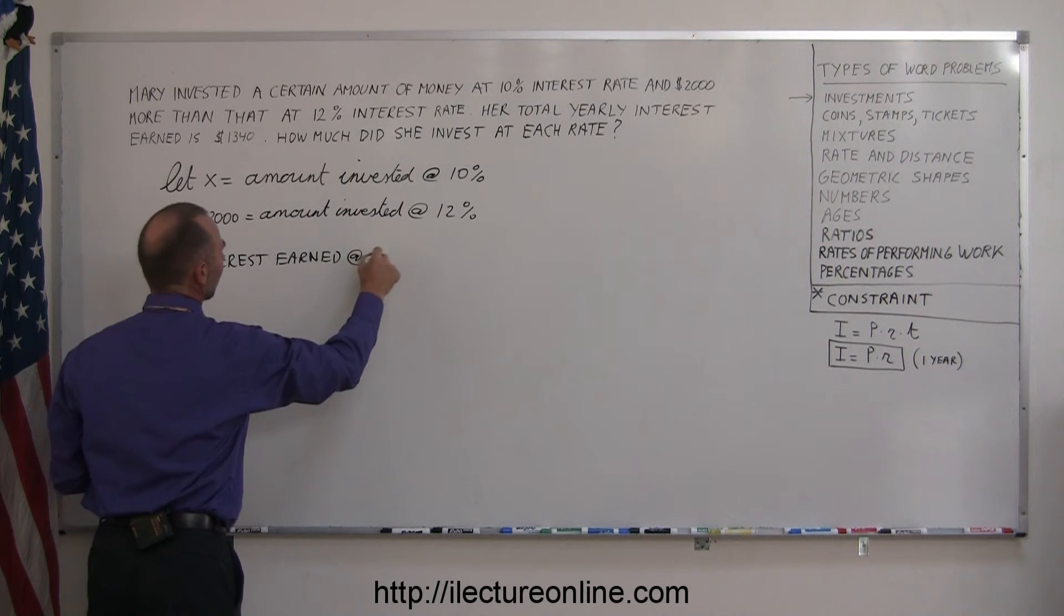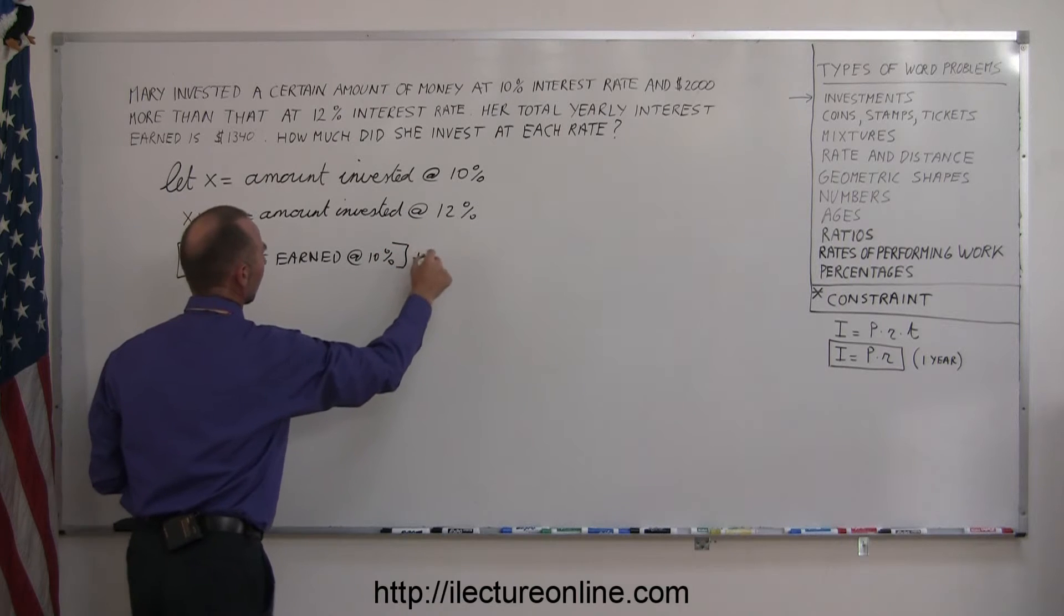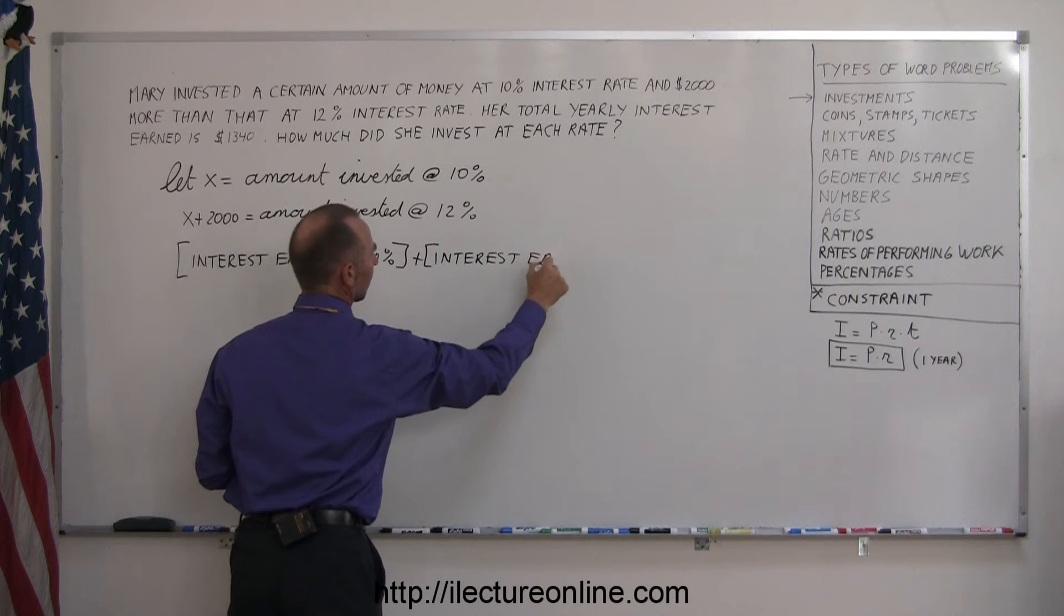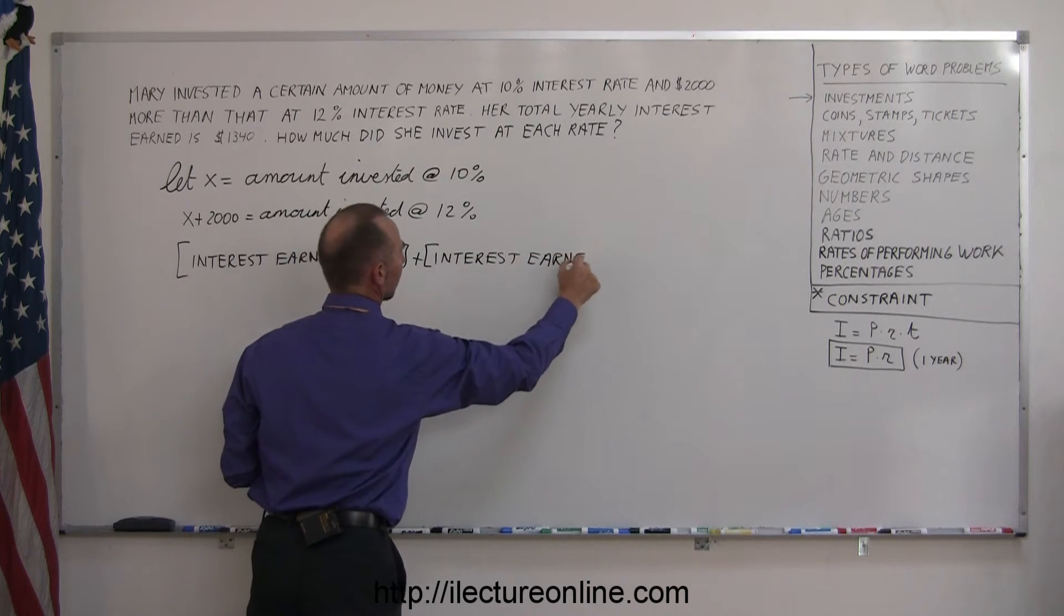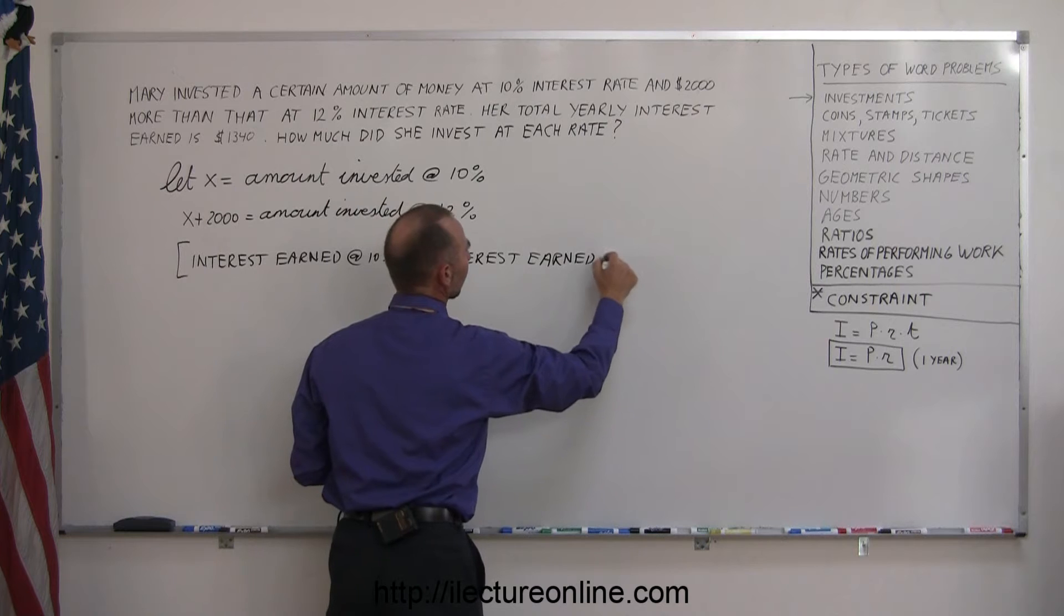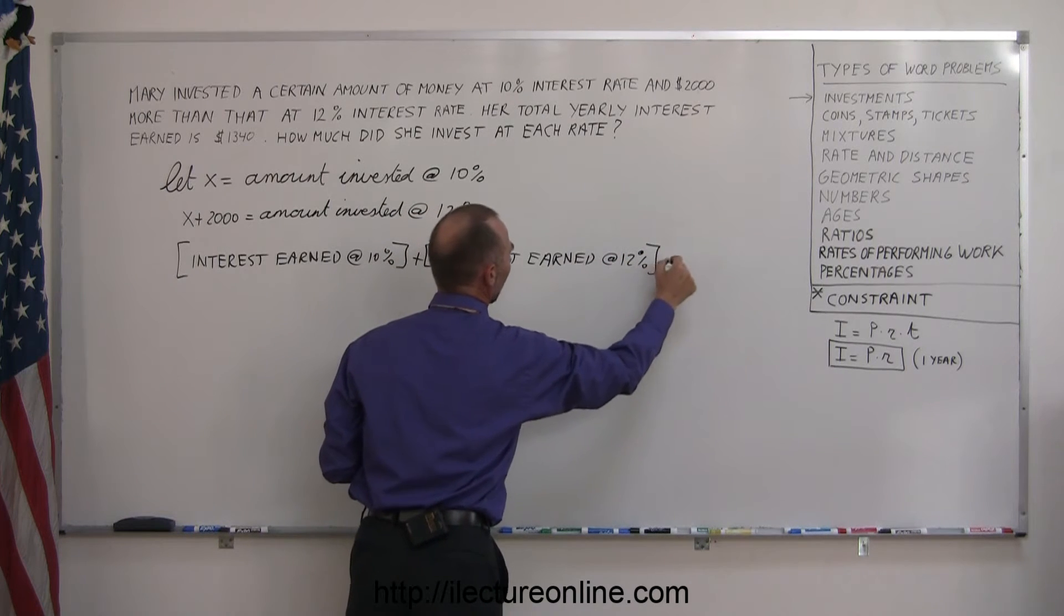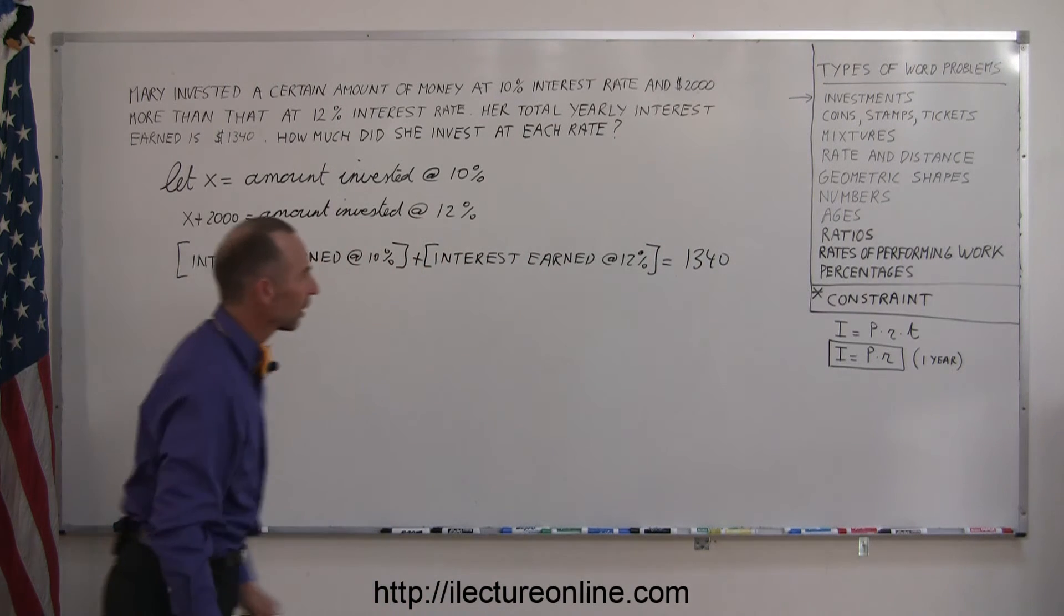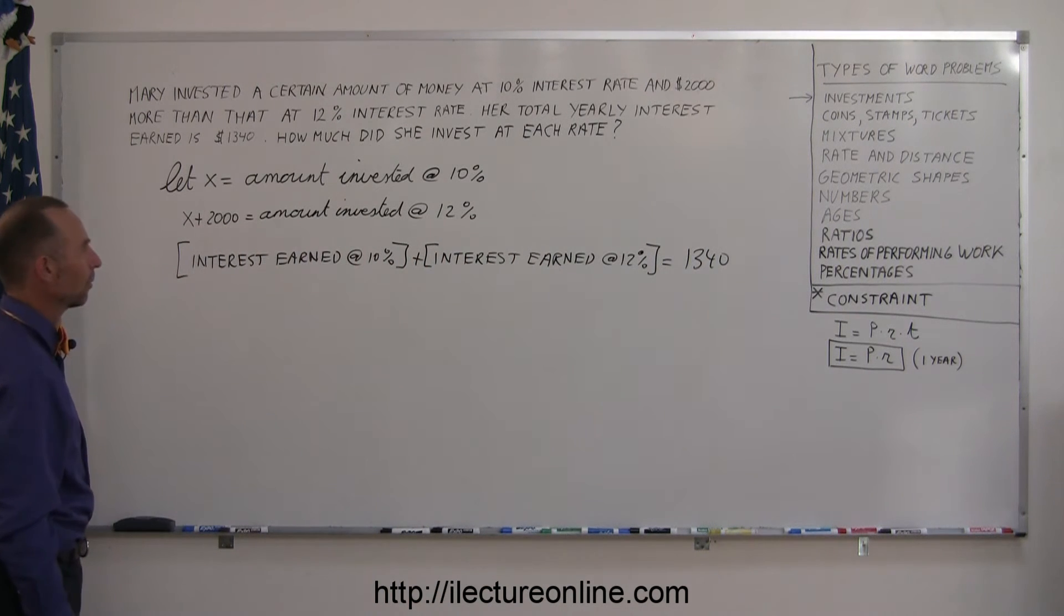at 10% plus the interest earned at 12% should add up to $1,340. There's the equation that will help us solve this problem.